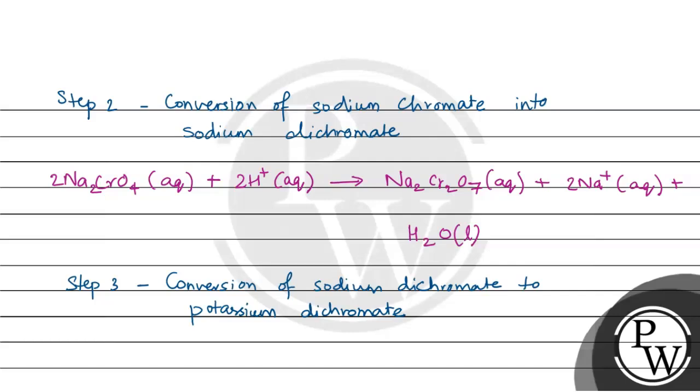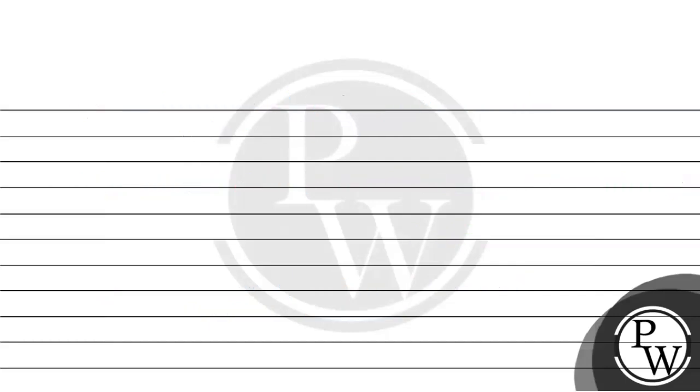The reaction involved is Na2Cr2O7 in aqueous form plus 2KCl. This gives K2Cr2O7, the final product, in aqueous form plus 2NaCl in aqueous form.